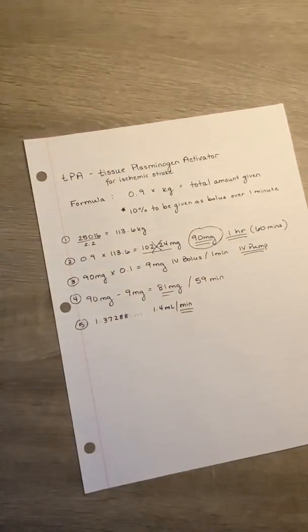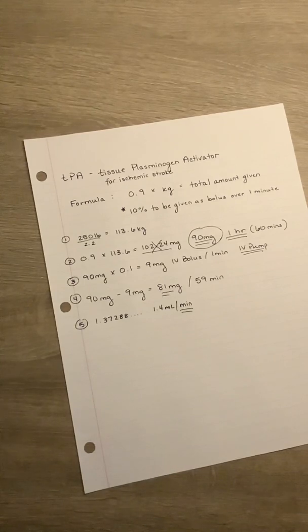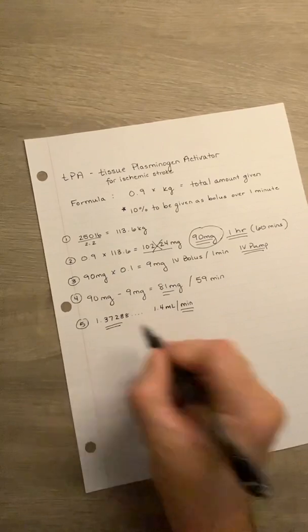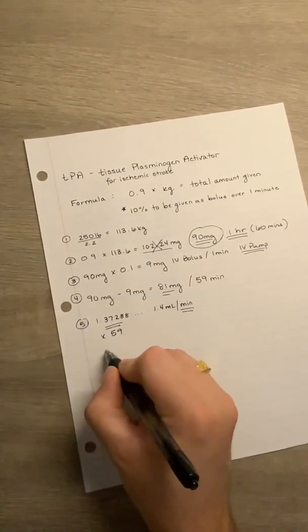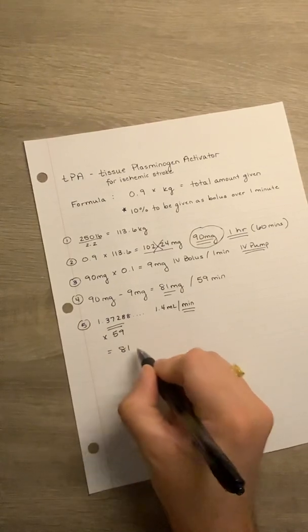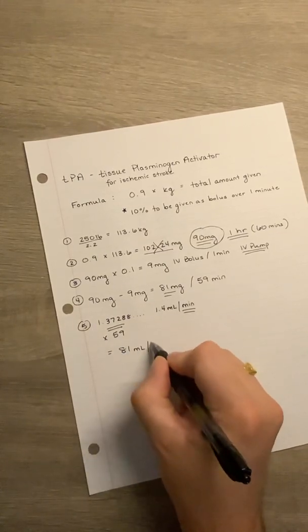But it's important to make the distinction between milliliters per minute and milliliters per hour. If the question is asking milliliters per hour, you're going to take this number, and you're going to times it by 59 minutes, which is going to give us 81 milliliters per hour.